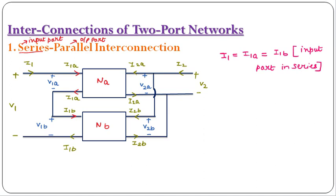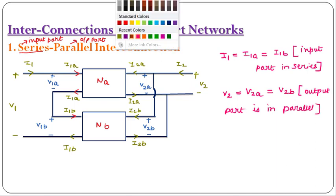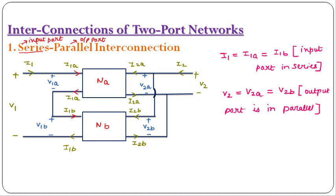Since the output port is connected in parallel, V2 = V2A = V2B. Also, the overall voltage V1 is a combination of V1A plus V1B — this is equation 1 — because in a series connection current is the same but voltage divides. Similarly, at the output port connected in parallel, voltage is the same but current divides, so I2 = I2A + I2B.